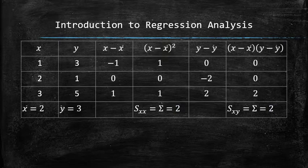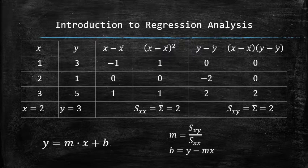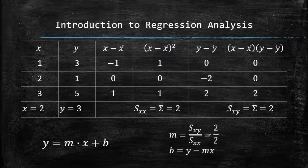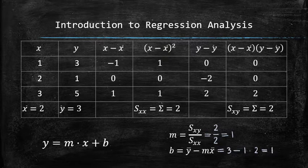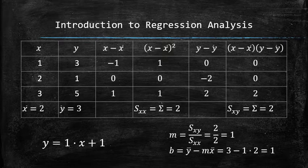To find the equation of the regression line in the form y equals mx plus b, we apply the given formulas for m and b. Turns out that y equals x plus one is the line of best fit, meaning there is no other line with a smaller sum of squared errors.